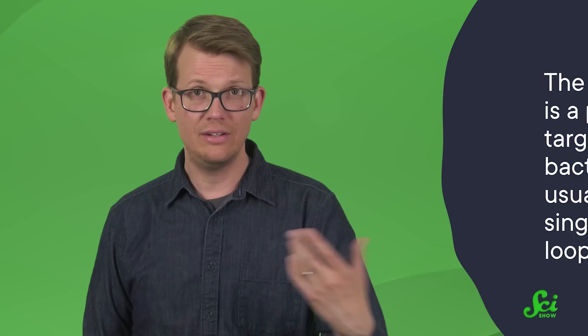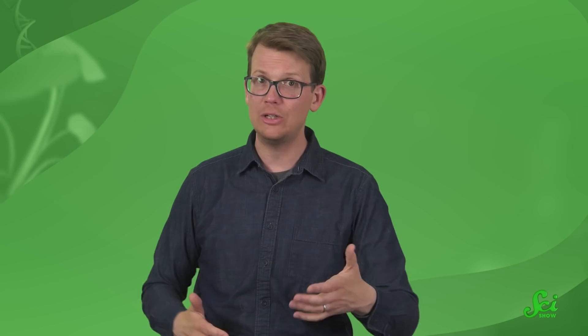So biologists are looking to knot theory to see how DNA manages to always stay ordered. The DNA in bacteria is a particularly good target because, just like the mathematical ideal, bacterial DNA is usually arranged in a single continuous loop. DNA's famous twisting double helix structure means that when a bacterium replicates its genetic material during reproduction, it inevitably creates knots that would kill the microbe if left unchecked.